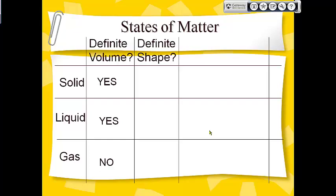Which ones have a definite shape? Solids have a definite shape — they don't change their shape very easily unless you break or shatter them. Liquids do not have a definite shape; they will take on the shape of whatever container you put them in. And gases also do not have a definite shape — they take up the shape of whatever area or container they are in.